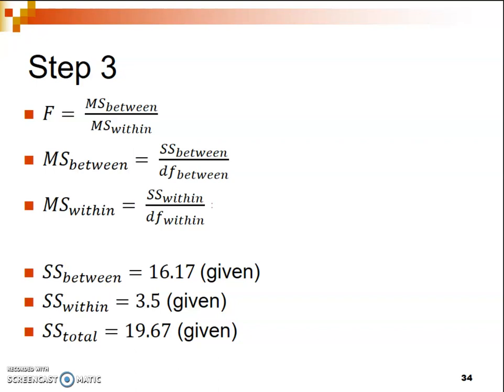I'll start with the bottom and work my way up to ultimately get to F. Starting with the MS within equation, we take the sum of squares within, which was 3.5, and divide it by the degrees of freedom within from step 2, which was 9. When you do the division and round it, you should get 0.39.